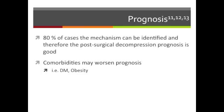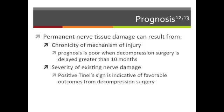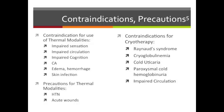Research by Ahmaud et al. found that in 80% of the cases the mechanism could be identified, and thus the prognosis associated with post-surgical decompression was good. Dellen et al. also found that comorbidities such as obesity and diabetes could worsen the prognosis. Permanent nerve tissue damage can result from delayed treatment as well as increased severity of damage to those nerves. A positive Tinel's Sign is indicative of favorable outcomes because that means the nerve is actually still sending signals. Precautions should be taken when using thermal modalities with patients that have hypertension and acute wounds. Thermal modalities are contraindicated for any patient with impaired sensation, circulation, or cognition, as well as cancer, edema issues, and skin infections.